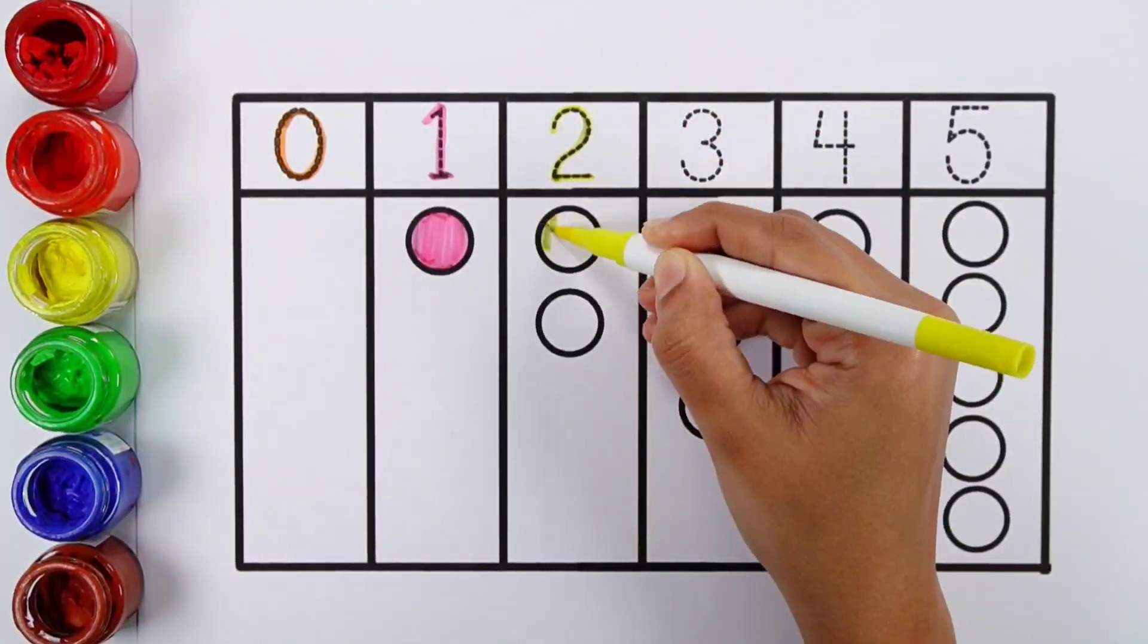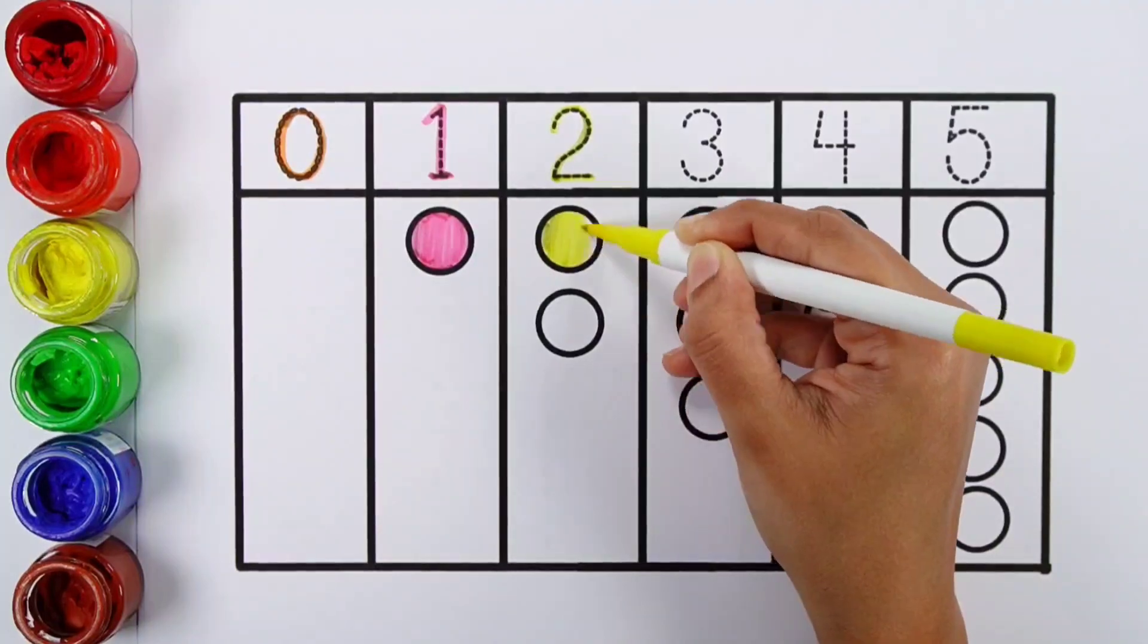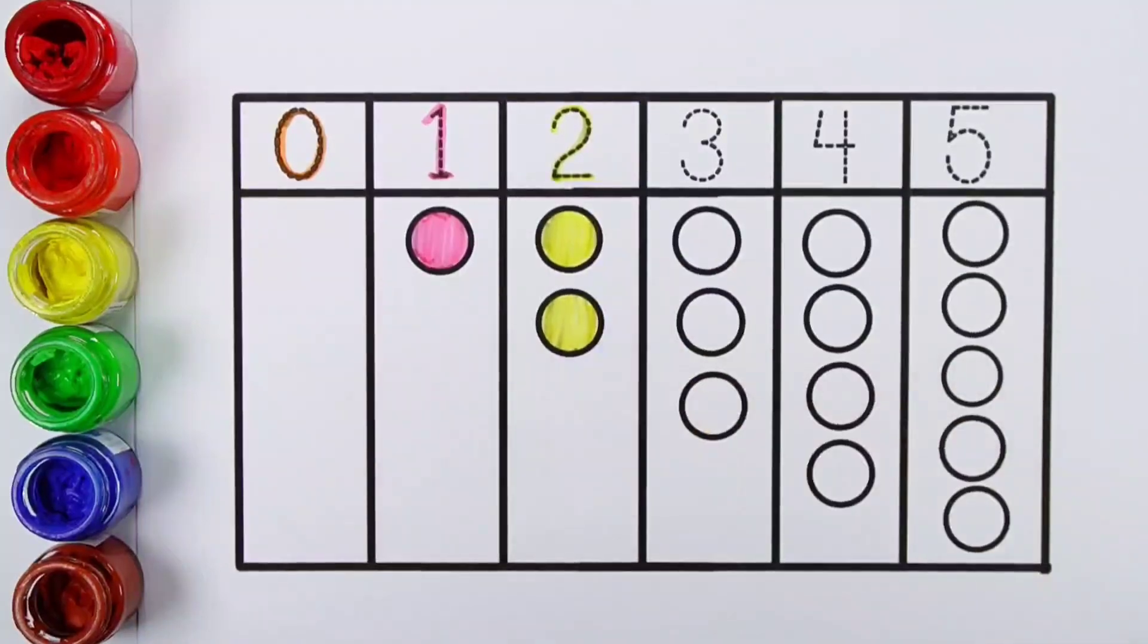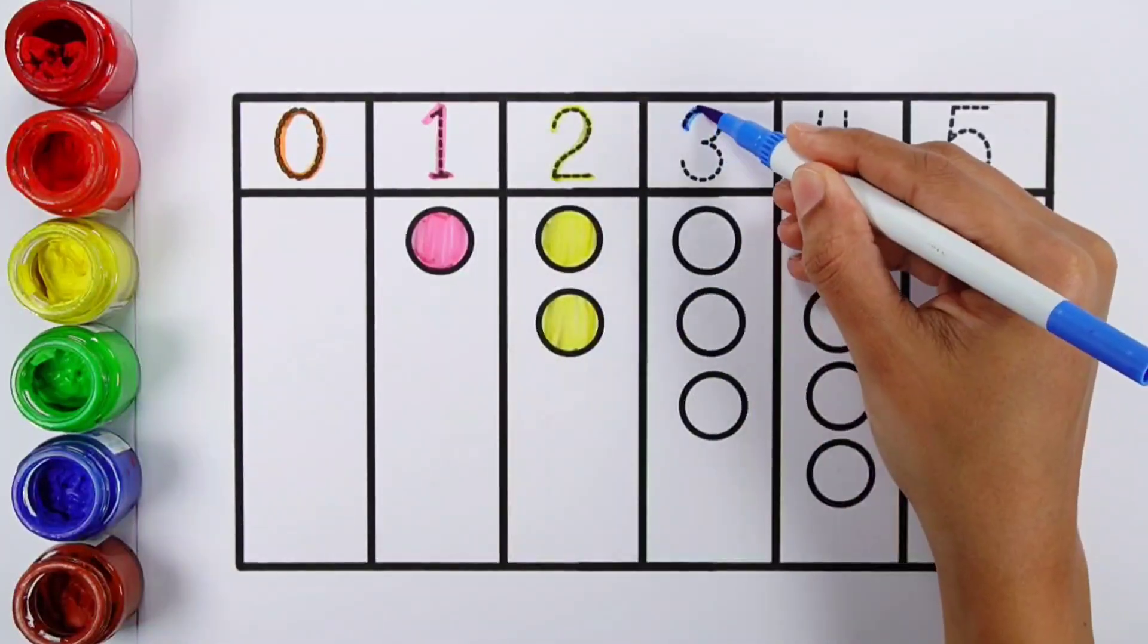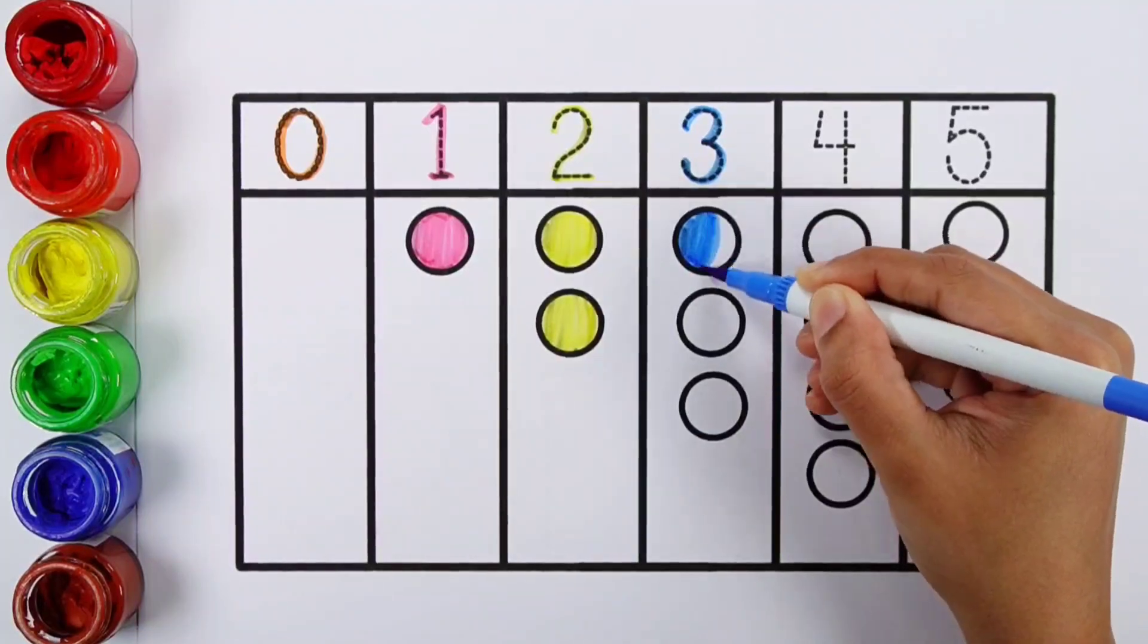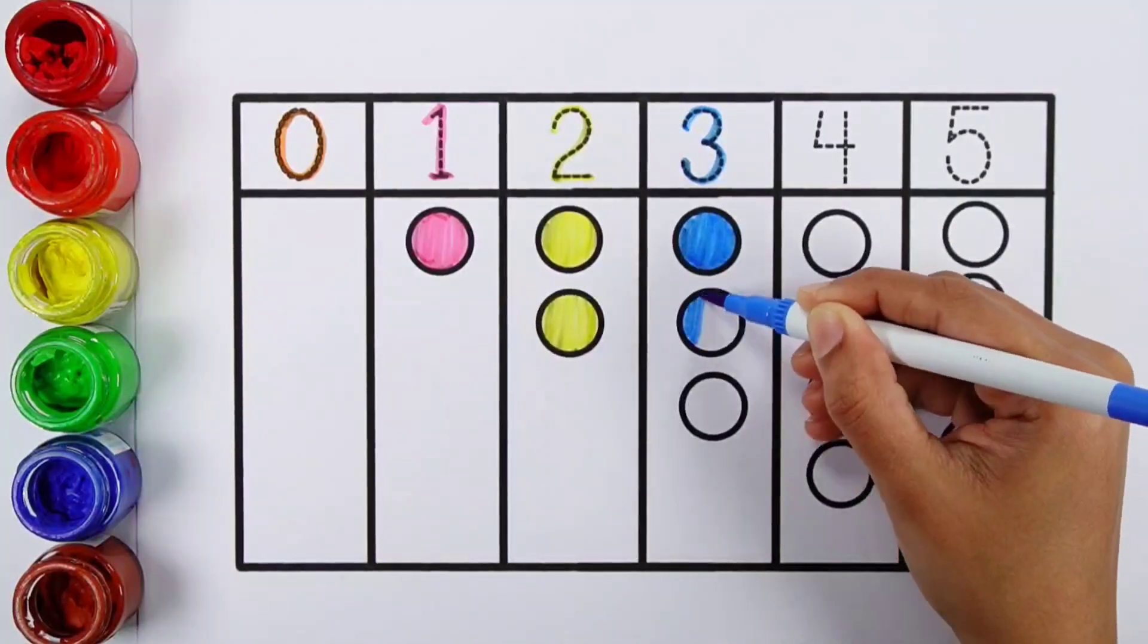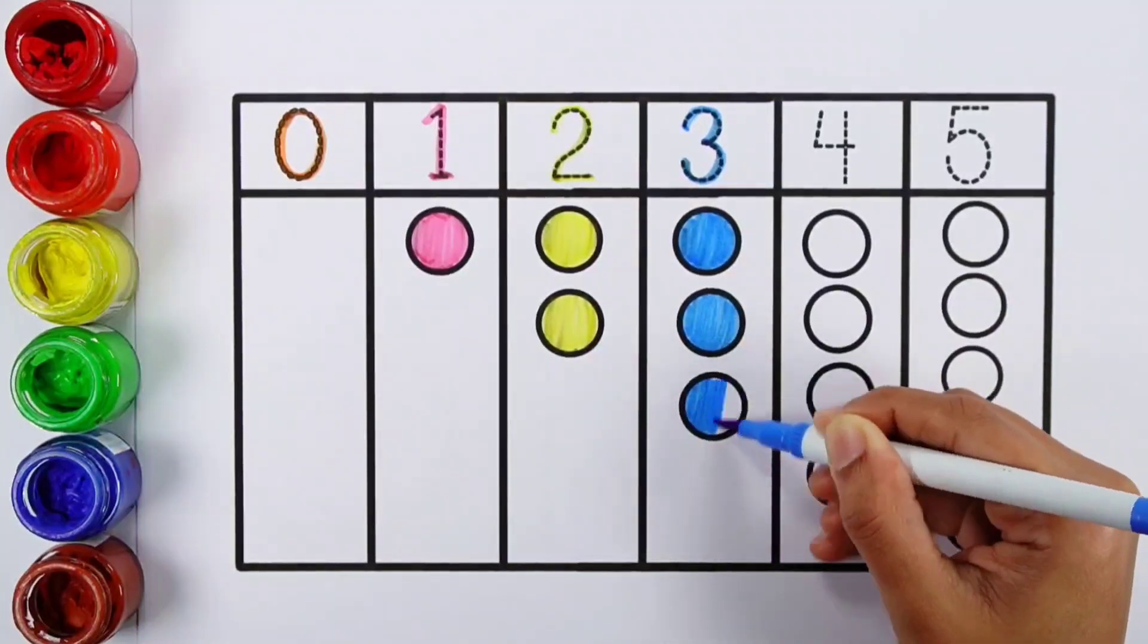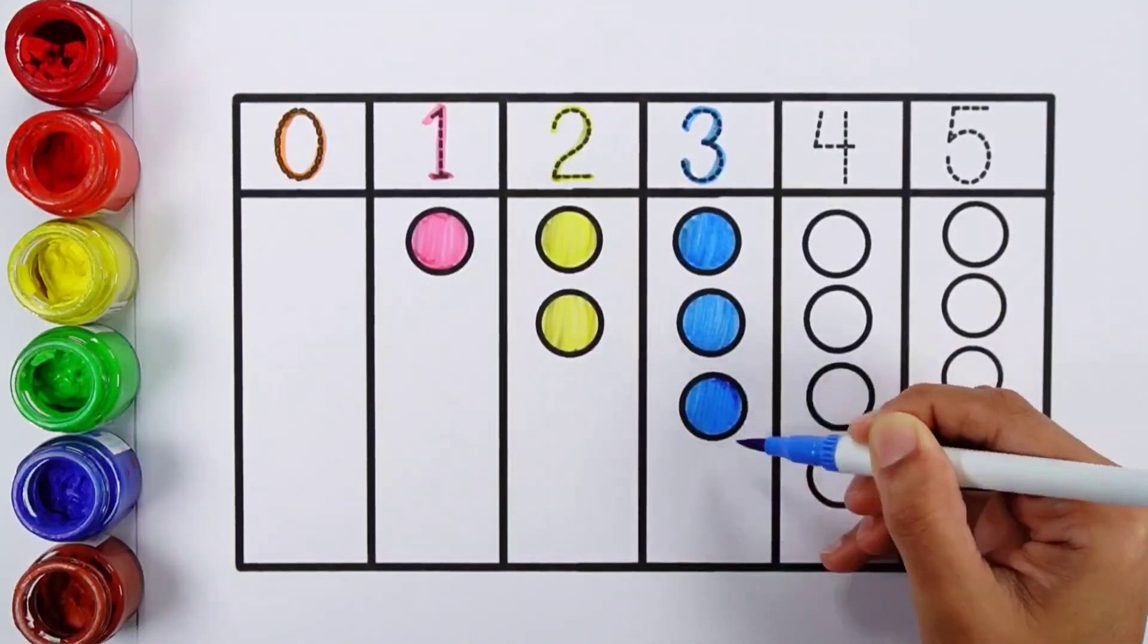Number two. One, two. Two balls. Three. One, two, three. Three balls.